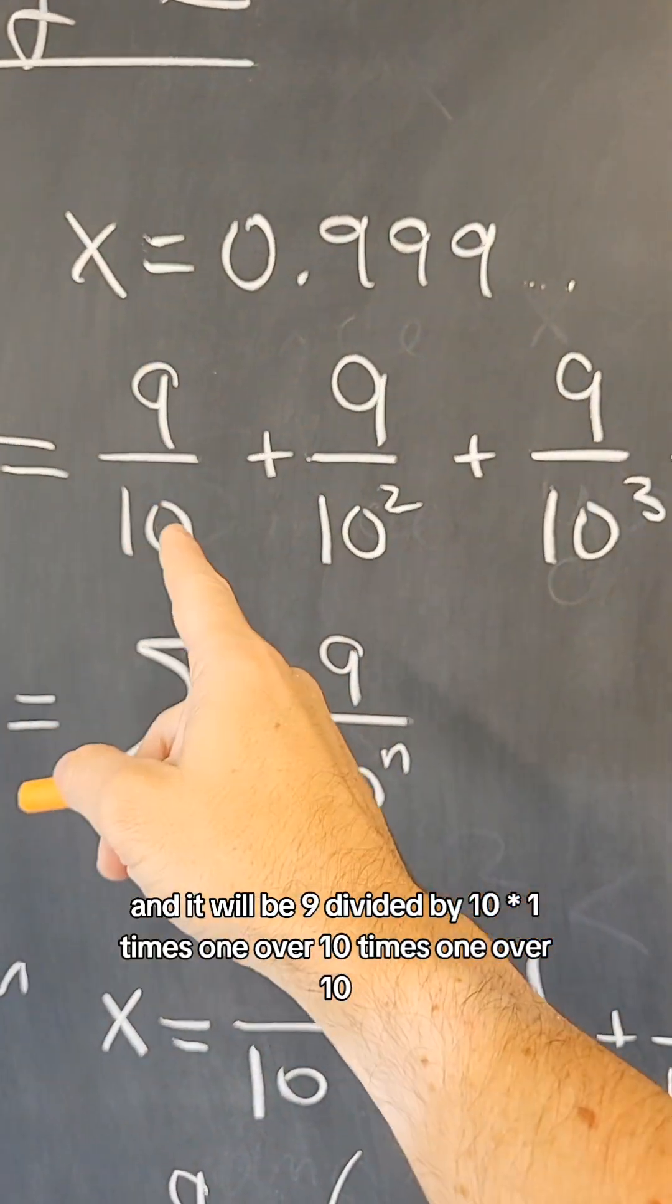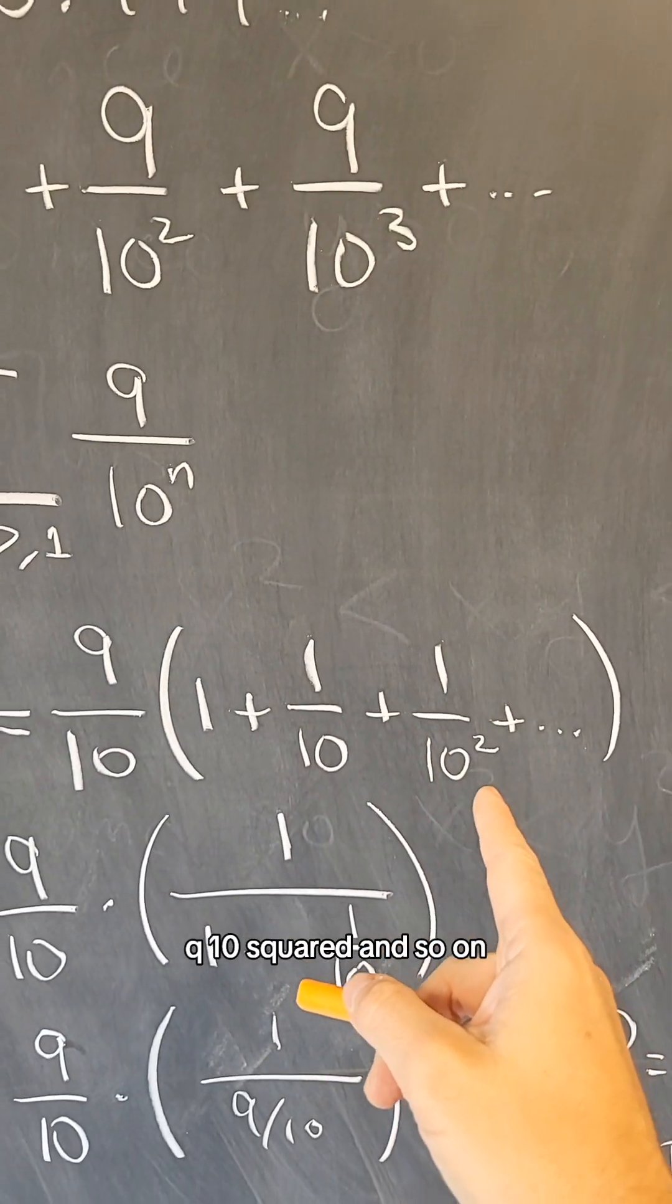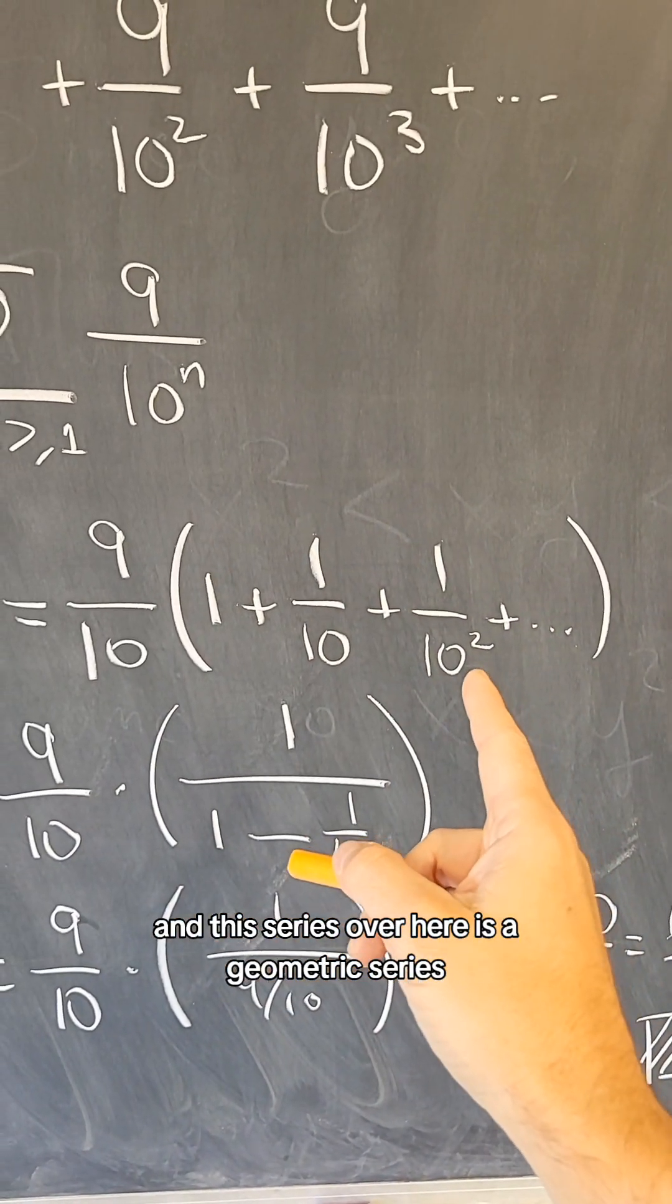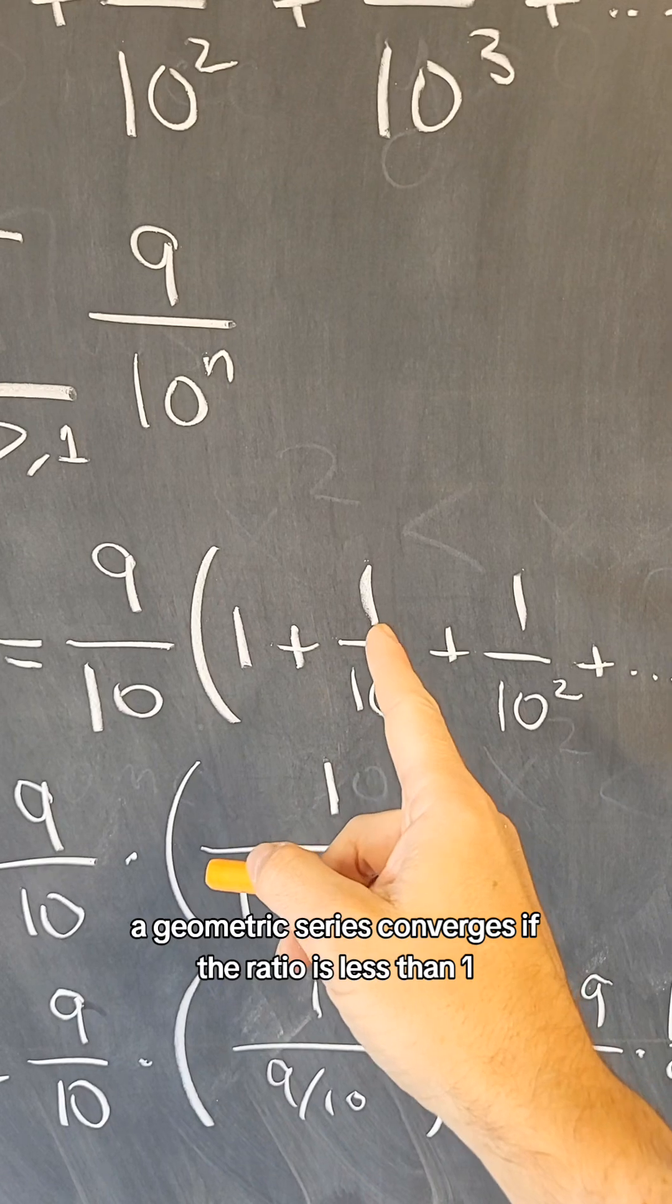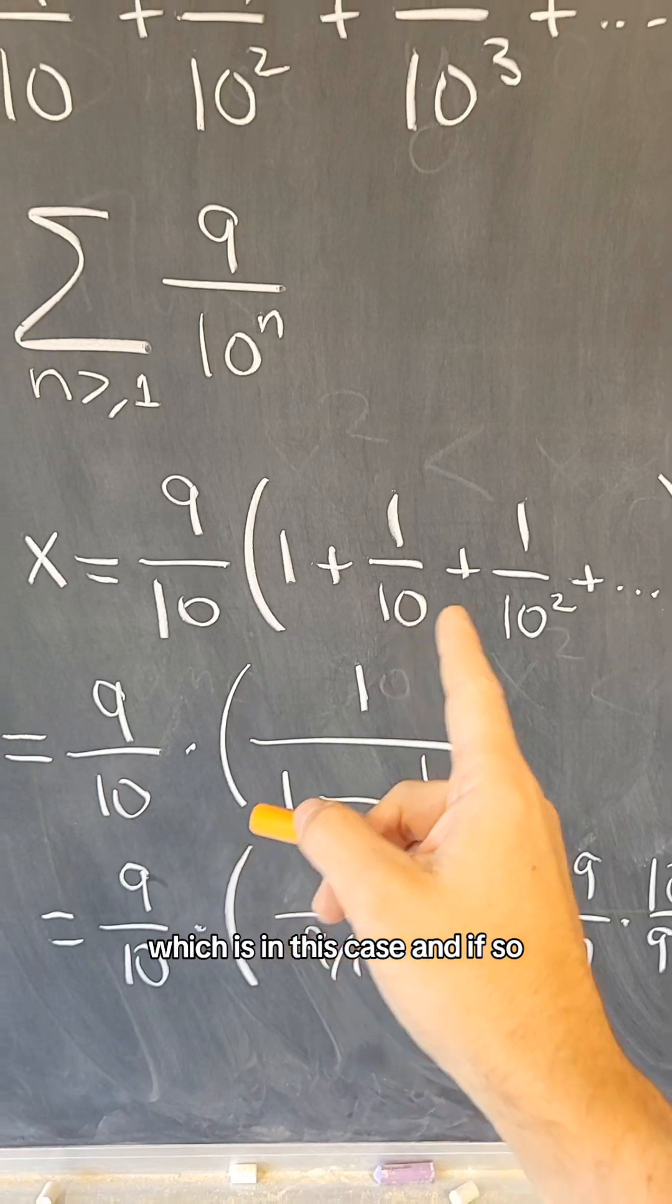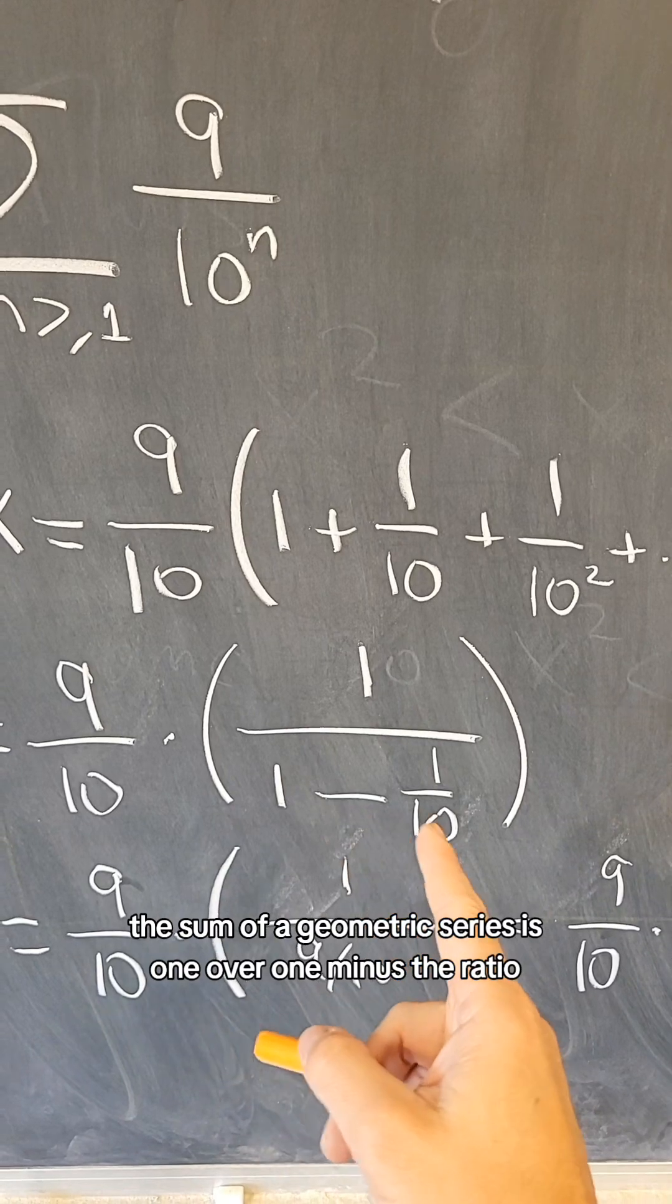And it will be 9 divided by 10 times 1 plus 1 over 10 plus 1 over 10 squared, and so on. And this series over here is a geometric series. A geometric series converges if the ratio is less than 1, which it is in this case, and if so, the sum of a geometric series is 1 over 1 minus the ratio.